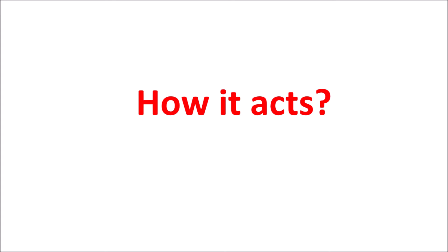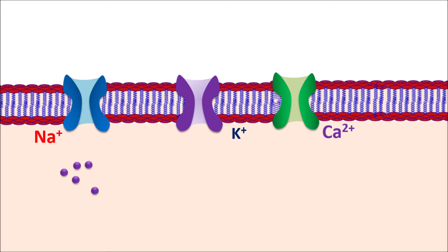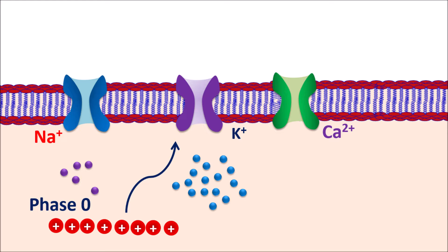Now let us see how this drug acts. On the SA node as well as nodal cells, different types of ion channels are expressed: sodium channels, potassium channels, and calcium channels. When an impulse reaches, sodium channels are opened and sodium ions enter into the cells. This sudden entry of sodium produces a rapid depolarization within the membrane, and this phase is called phase 0 — the rapid depolarization phase. At the end of phase 0, because of the development of positive membrane potential, potassium channels are immediately opened. Since potassium is outward going, potassium ions go outside, leading to phase 1, the partial repolarization phase.